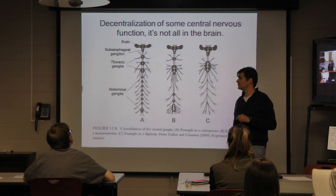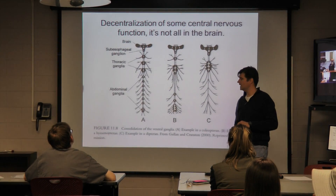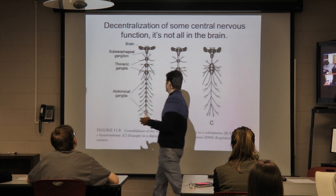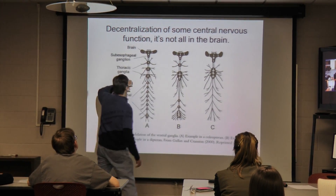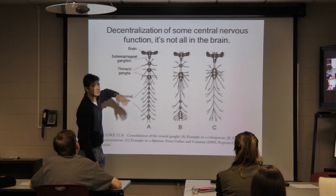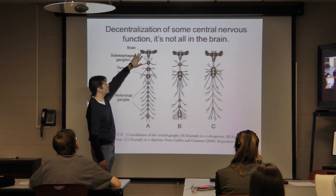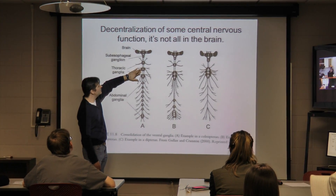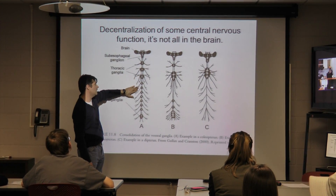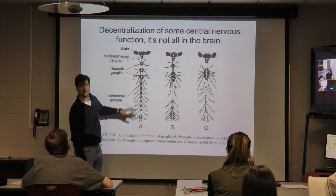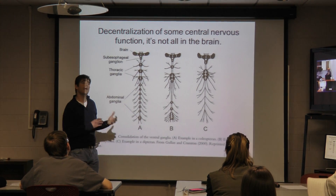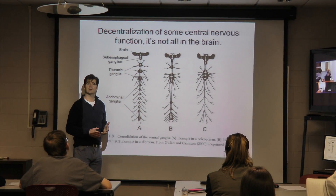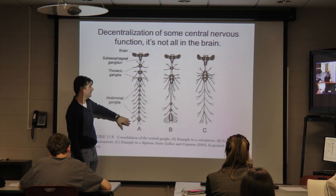Now, there is, of course, substantial variation amongst insects. If we look at the basal insect nervous system plan, it is just as I told you: a centralized brain in the head, sitting dorsally, in a series of ganglia. Typically, one ganglion per every two segments in the thorax and abdomen.